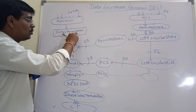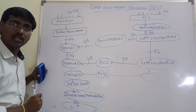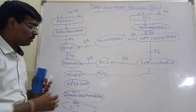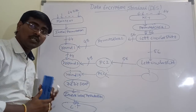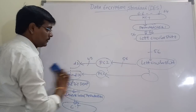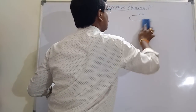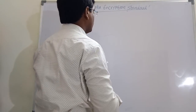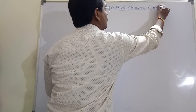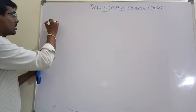Now we will discuss how initial permutation is performed, how inverse initial permutation is performed, and the procedure of a single round. All rounds are performed in a similar fashion, so we will discuss about a single round.